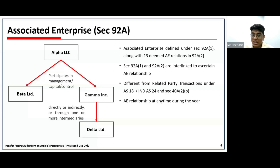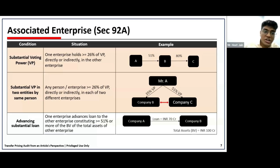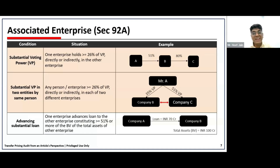Important to note that the associated enterprise definition is different from the related party definition under AS 18 or Ind AS 24, as well as from Section 40A(2)(b) of the Income Tax Act. The 13 clauses of associated enterprise cover the major situations commonly encountered.